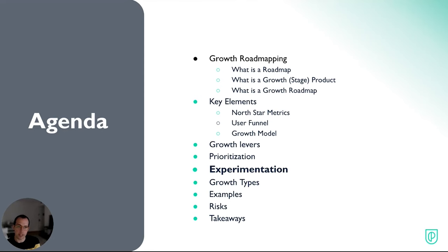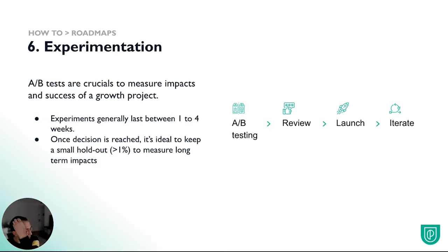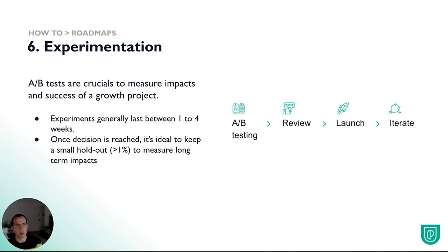When you have projects, you want to test them. Testing generally lasts one to four weeks, and once a decision is reached it's ideal to keep a small holdout. The process is: A/B test, review, launch, iterate. This doesn't always happen in zero-to-one — you might not have enough volume for fair A/B testing, or you've invested too much and non-launching isn't a choice. But in growth stage, because the projects are relatively cheap and you have so many of them, non-launching is actually an acceptable outcome if you think it's not working.